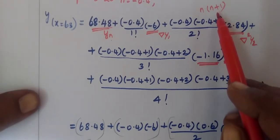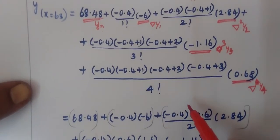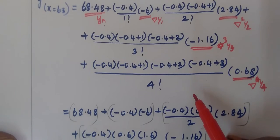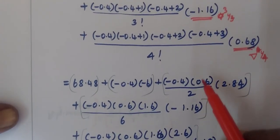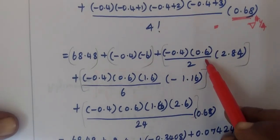Now for delta squared, the formula means n into n plus 1 divided by 2.